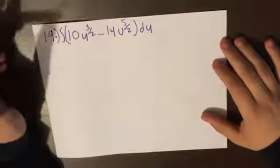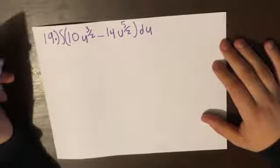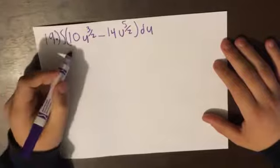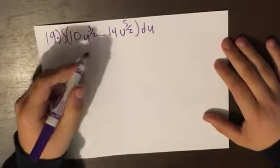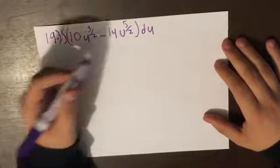The next question we're going to do is section 7.1, question number 19, which is the integral of 10u^(3/2) minus 14u^(5/2) du.